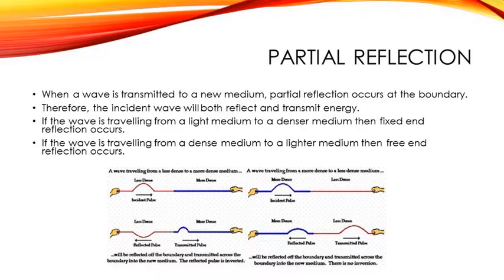So here we have less dense to more dense, which will give us a fixed end reflection. Okay, so we have a crest traveling to the right, and then on the way back, coming back from the transmission period, we have a trough, but we have a crest going through the more dense.